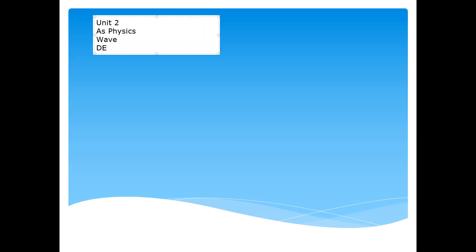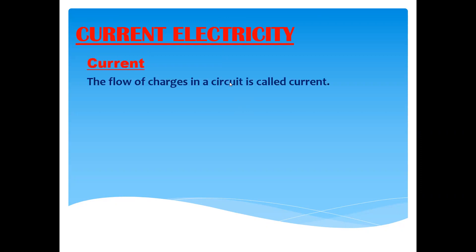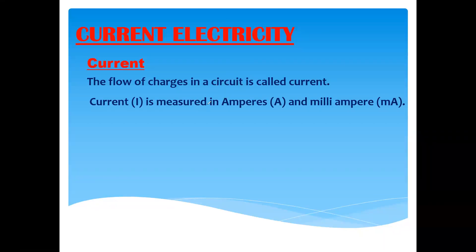The topics covered in this unit are waves, DC electricity, and light. Starting with DC electricity, the basic concept of electric current is defined as the flow of charges, or rate of flow of charges. The SI unit of current is the ampere, and for small currents we can use milliampere or microampere.